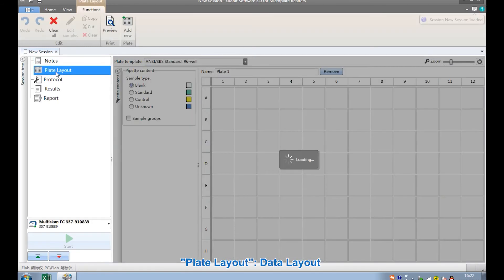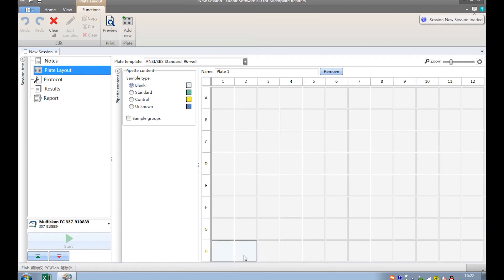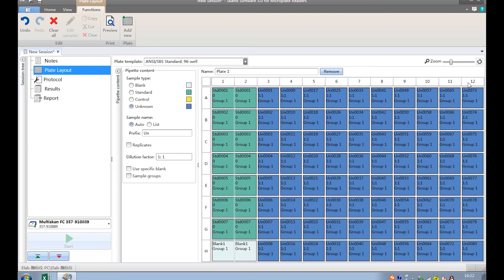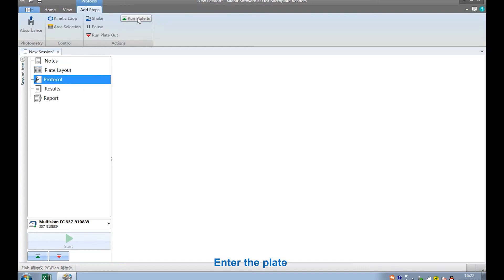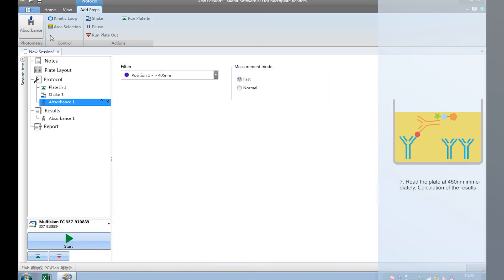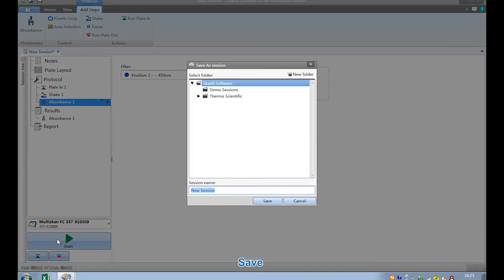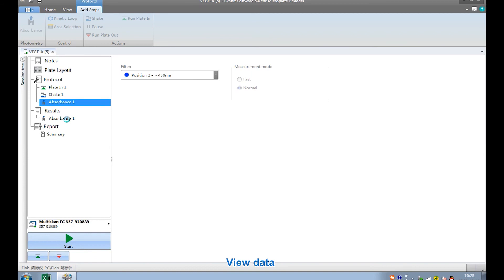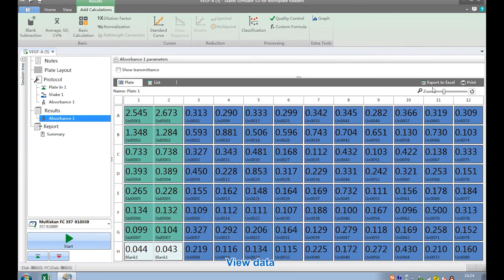Plate layout. Data layout. Take out. Enter the plate. Expand light. Shaking. Fluctuation speed: Medium. Continuous. Duration: 5 seconds. Absorbance. Filter: 450 nm normal start. Save. Measurement. New data. Saved data.